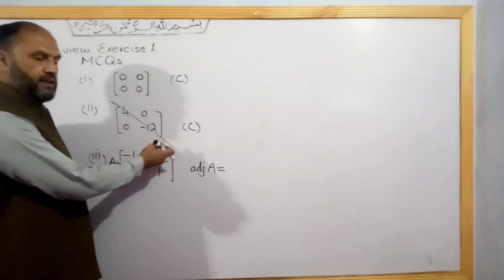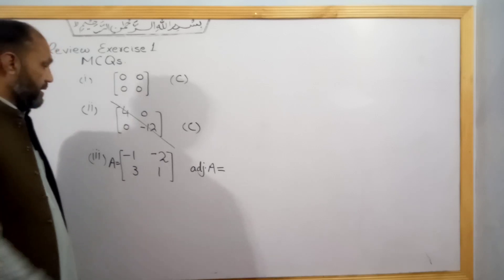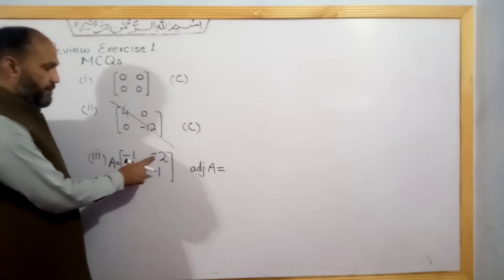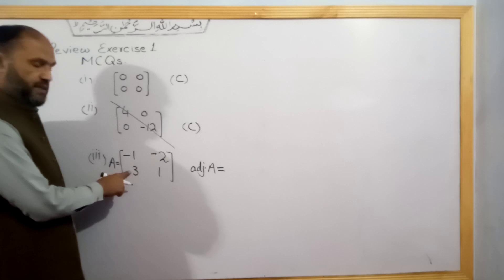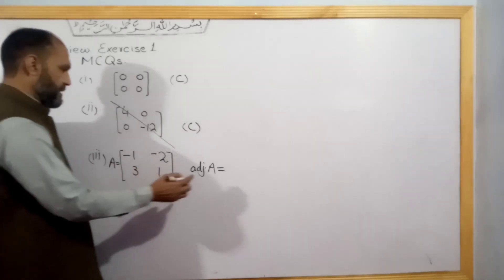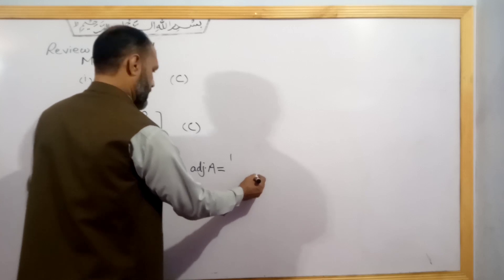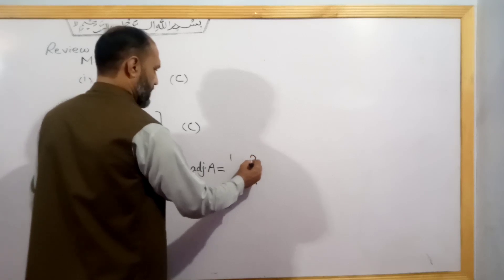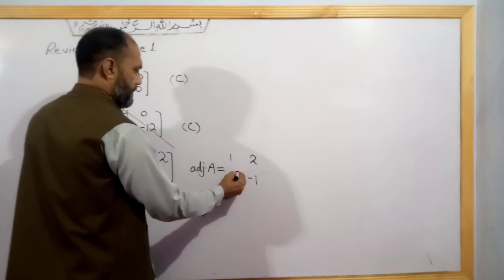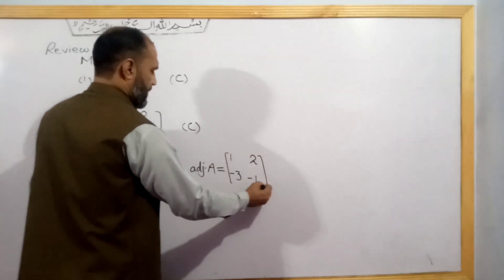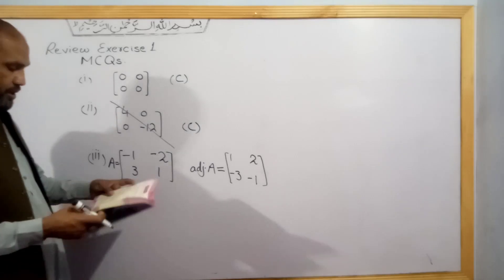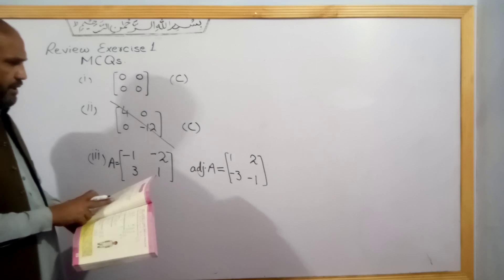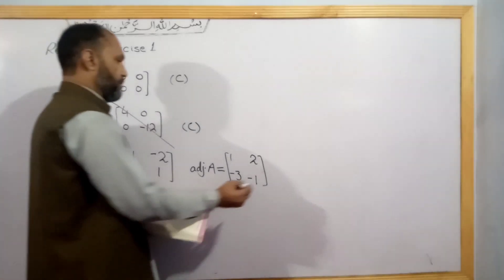If the diagonal is equal to minus 2, 3, then A adjoint gives us 1, 2, minus 3, minus 1. The answer matches option — 1, 2, minus 3, minus 1 is the correct option.